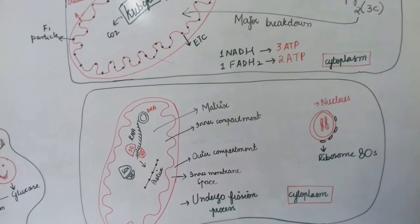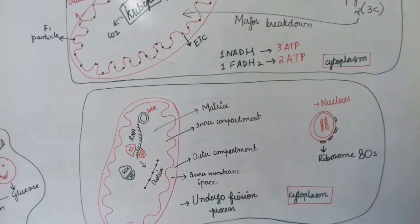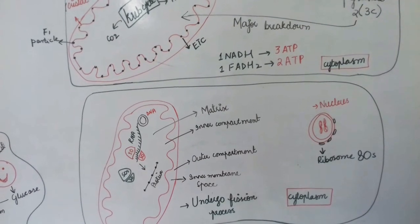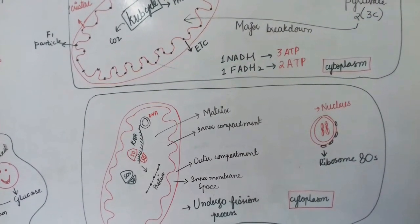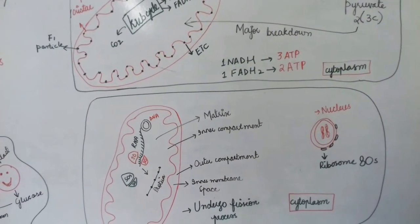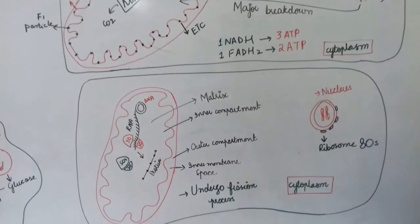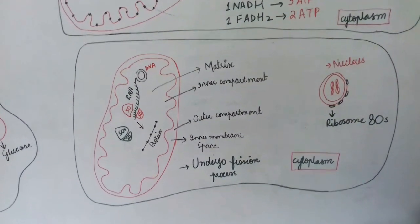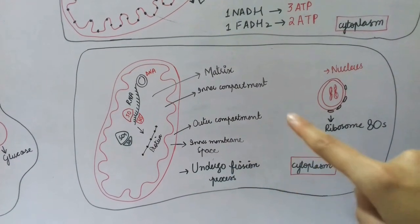Morphology: The matrix is the middle part, also called the inner compartment. The region between the outer membrane and the cristae is called the outer compartment or inner membrane space.